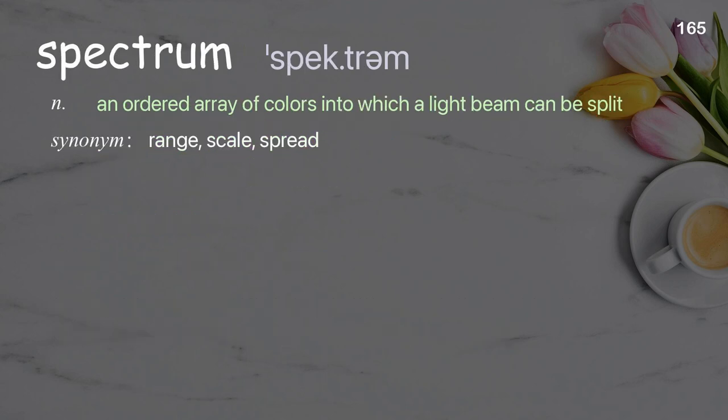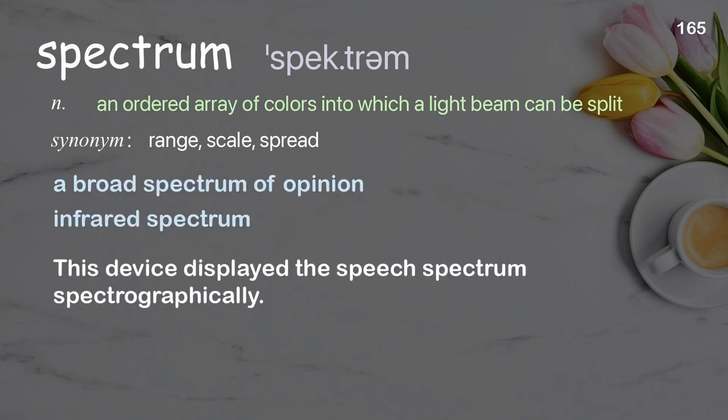Spectrum: an ordered array of colors into which a light beam can be split. Examples: a broad spectrum of opinion, infrared spectrum. This device displayed the speech spectrum spectrographically.